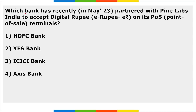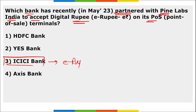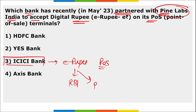ICICI Bank partnered with Pine Labs India to accept the digital rupee (E-Rupee) on their point-of-sale terminals in Mumbai, Maharashtra and Bangalore, Karnataka. The payment process is completely digital via QR code. The E-Rupee was launched by RBI in two segments: retail and wholesale.